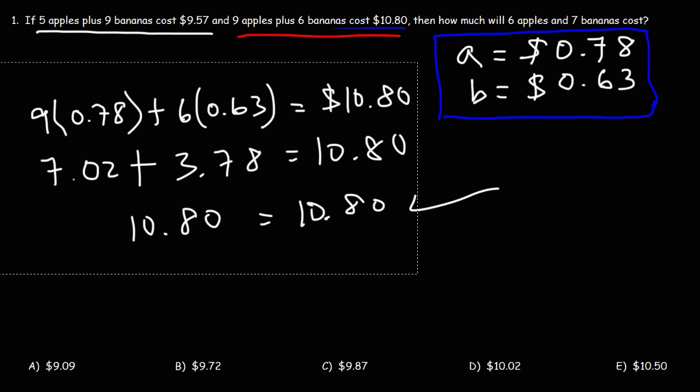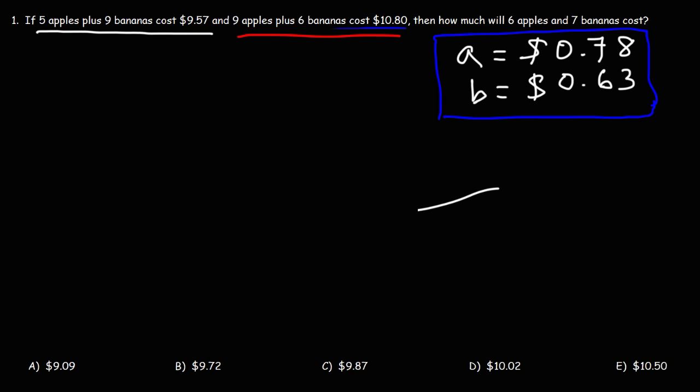So now that we have the cost of each individual apple and each individual banana, we can now calculate the cost of 6 apples and 7 bananas. So that's going to be 6A plus 7B. A is 0.78 and B is 0.63.